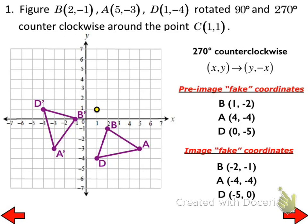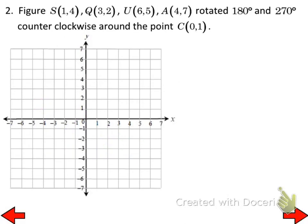Everybody try number 2, both parts, with your shoulder partner using this new technique of the fake coordinate system. We're supposed to plot S, Q, U, A and rotate once at 180° counterclockwise and again at 270° counterclockwise around (0, 1). Just remember: if you're asked to do a clockwise rotation, convert it to counterclockwise — a 90° clockwise is a 270° counterclockwise, and the end result looks the same.